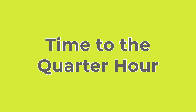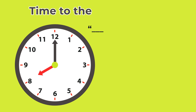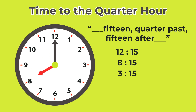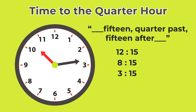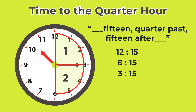In this video, we are going to learn time to the quarter hour. I am talking about the quarter hour. It means the hour hand is between the hour and the minute hand — the long hand is always on the three. It's always one quarter past whichever hour. This is the one quarter, two quarters, three quarters, and four quarters.